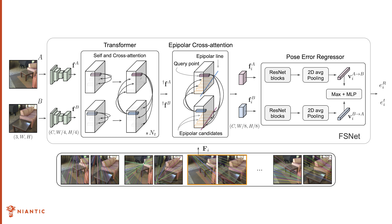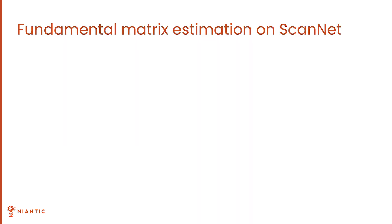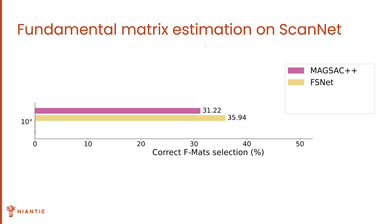As seen in the failure cases, current methods fail the most in ScanNet, an indoor dataset. Here we plot the percentage of times a correct fundamental matrix was selected by the MagSac++ or FSNet scoring, where a fundamental matrix is labeled as correct if the pose error is below 10 degrees.